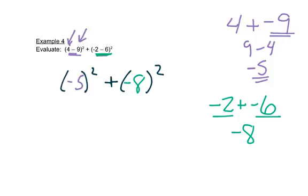So now we can do the exponents part. We'll do this one first. Remember this means negative five times negative five because of the parentheses. Negative five times negative five is a positive twenty five. We'll keep the plus there.